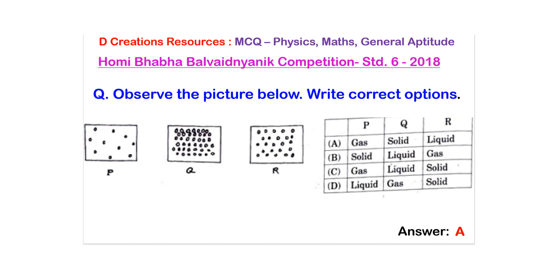So Q has to be solid and as expected R is going to be liquid. So do we have this option? Yes.